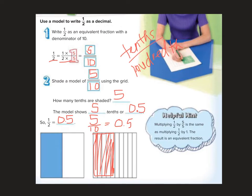Let's see the helpful hint. Multiplying 1 half by 5 fifths is the same as multiplying 1 half by 1. The result is an equivalent fraction. So if I wanted to write 5 tenths, and we know 5 tenths reduces to 1 half, so they're both written as 5 tenths.